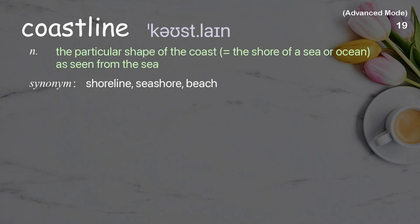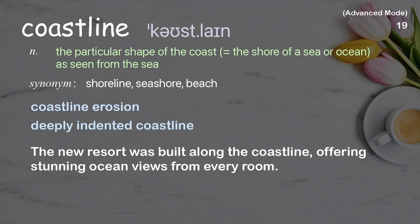Coastline: The particular shape of the coast — the shore of a sea or ocean — as seen from the sea. Examples: Coastline erosion, Deeply indented coastline. The new resort was built along the coastline, offering stunning ocean views from every room.